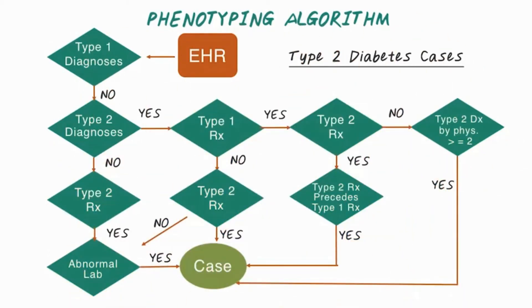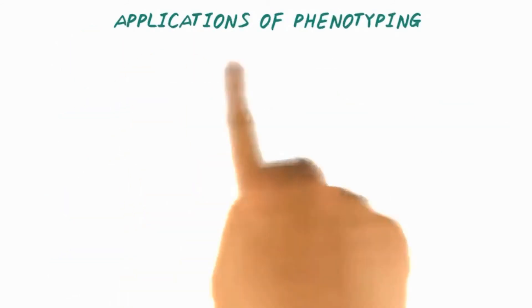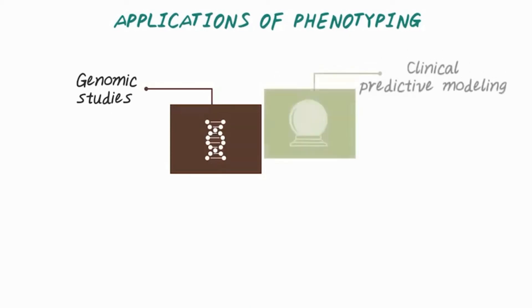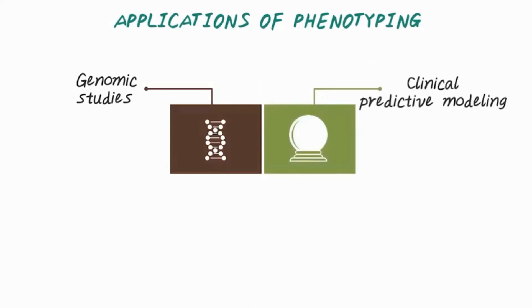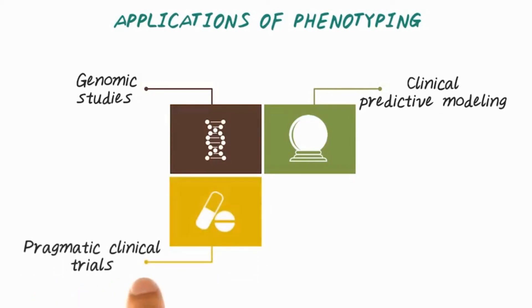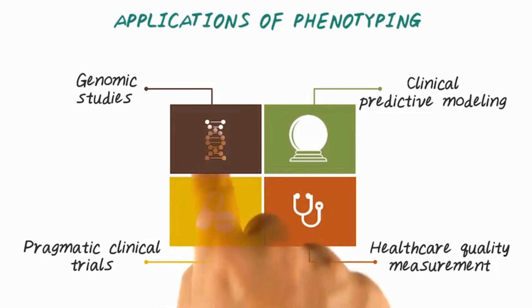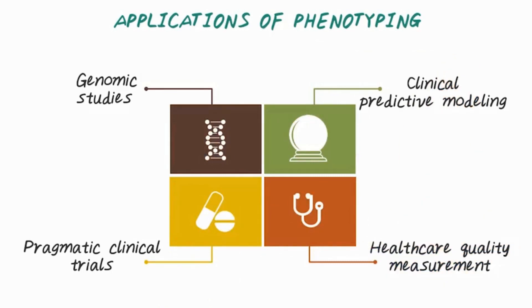There are many different applications that require phenotyping. For example, genomic study, which is about finding relationships between genomic data and phenotypic data. Clinical predictive modeling, which is about building accurate, robust, and interpretable prediction models about disease onset and other related targets such as hospitalization. Pragmatic clinical trials, which is about comparing treatment effectiveness in real-world clinical environments using observational data like electronic health records. And healthcare quality measurement, which is about measuring efficiency and quality of care across different hospitals. All those applications depend on phenotyping algorithms.